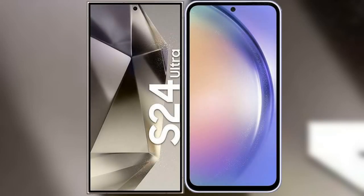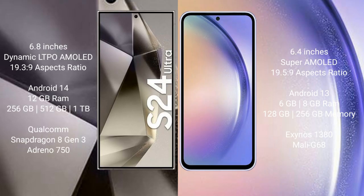I will compare the new Samsung Galaxy S24 Ultra with Samsung Galaxy A54. Samsung Galaxy S24 Ultra comes with a 6.8-inch Dynamic LTPO AMOLED Display and an aspect ratio of 19.3:9. Samsung Galaxy A54 comes with a 6.4-inch Super AMOLED Display and an aspect ratio of 19.5:9.